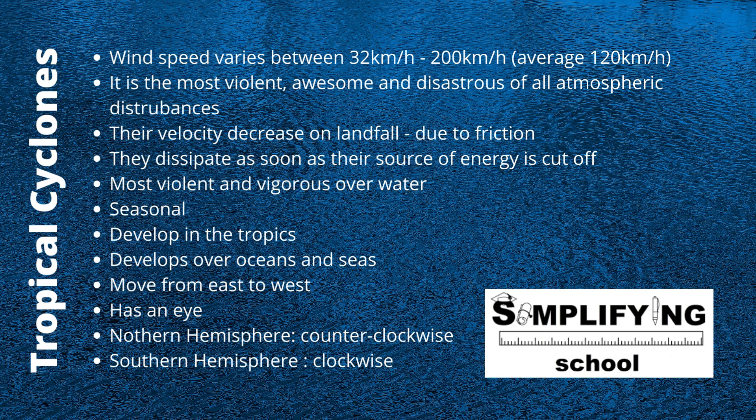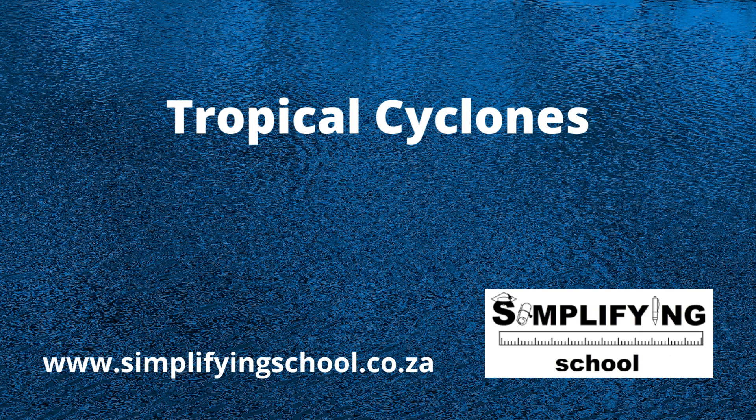Tropical cyclones have an eye. This is the central region of clear skies, warm temperatures, and low atmospheric pressure.